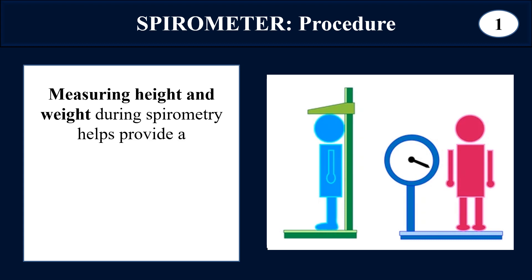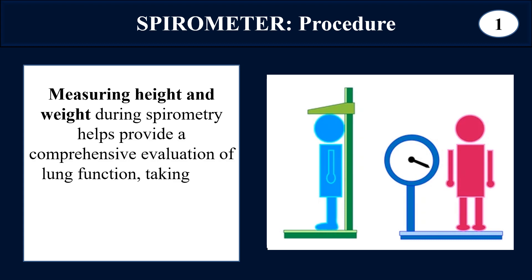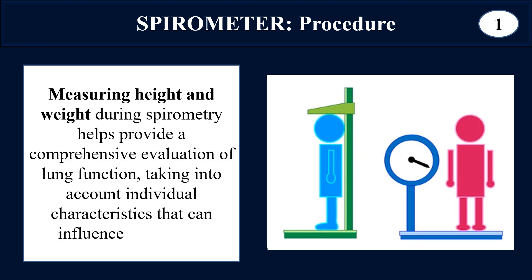In the first step, age is recorded and then the height and weight of the person are measured. Height and weight are measured because these characteristics influence results. A person with greater height tends to have longer or larger lungs, and weight is measured because obese persons tend to have compressed lungs, so their lung volumes may be affected by their weight.